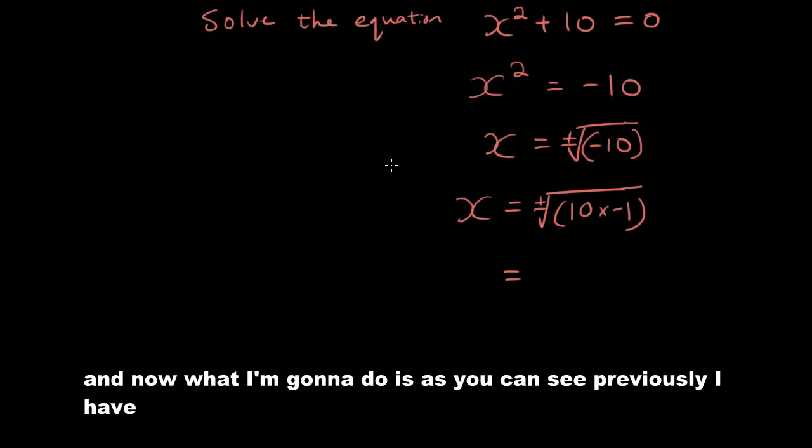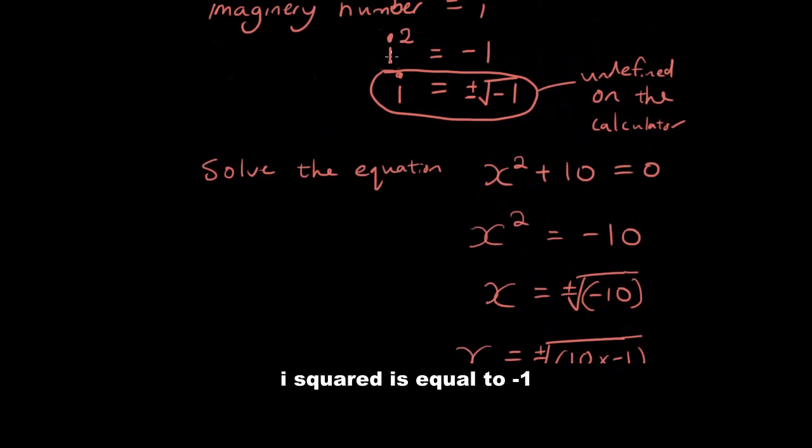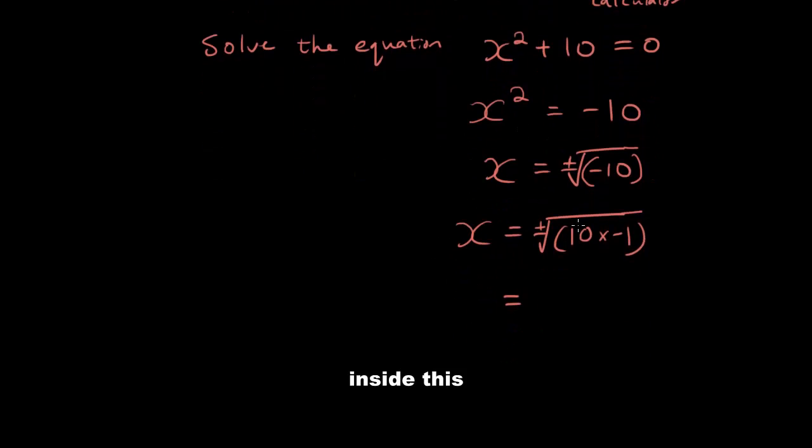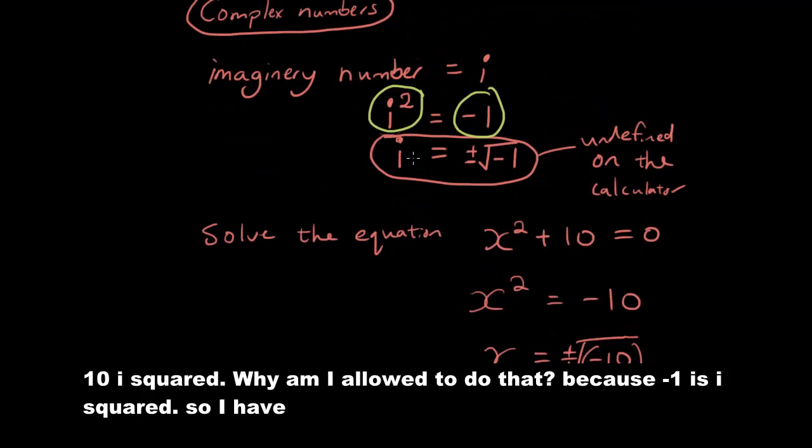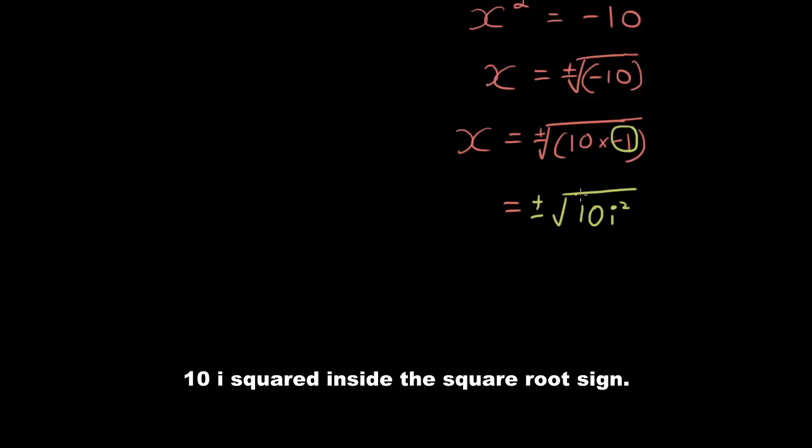And now what I'm going to do is, as you can see previously, I have i squared is equal to negative 1. So I'm going to substitute this variable i squared into negative 1 inside this equation. So now I'm going to write plus minus square root of 10i squared. Why am I allowed to do that? Because negative 1 is i squared. So I have 10i squared inside the square root sign.